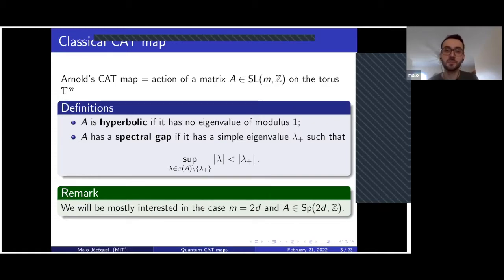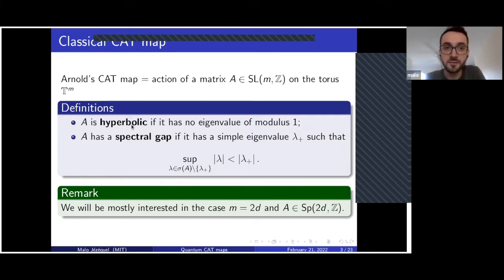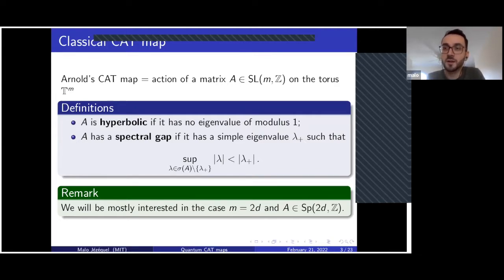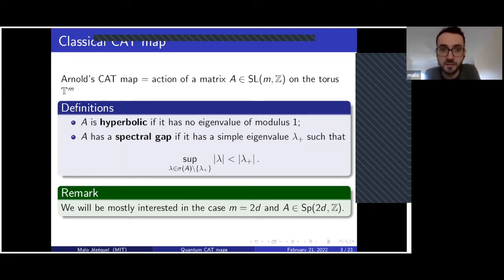Among cat maps, there are some particular cases we will be mostly interested in. The one that has been widely studied is the hyperbolic case, when the matrix A has no eigenvalue of modulus one. In that case, the associated cat map is an example of an Anosov diffeomorphism, a widely studied class of hyperbolic dynamics, and the main example of such — there are not many other examples up to continuous conjugacy.